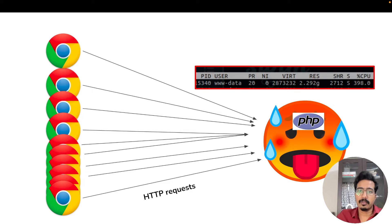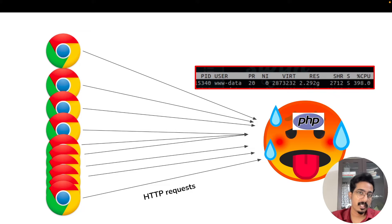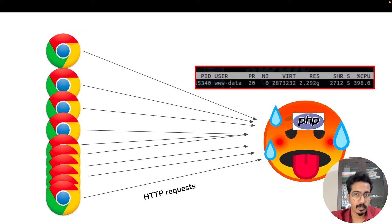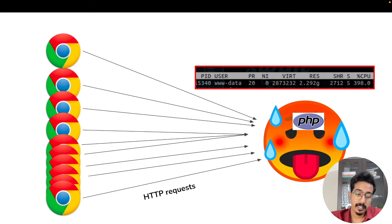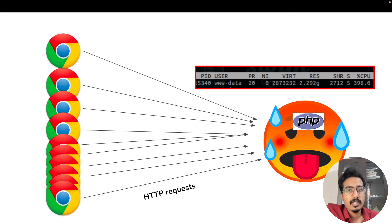If you change the nofile limit to a very high value, can you then accept one million connections? Remember, for every TCP connection the OS has to allocate some memory and there is CPU overhead too. It's ultimately going to depend on your server's capacity — how much RAM and CPU power it has. As connections increase, CPU usage spikes and RAM usage increases. At some point you'll run out of RAM and CPU, and that becomes the practical limit.